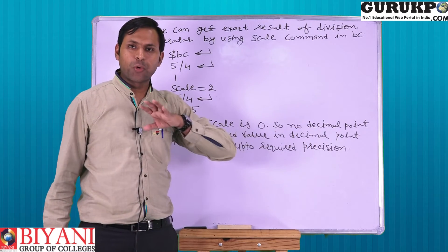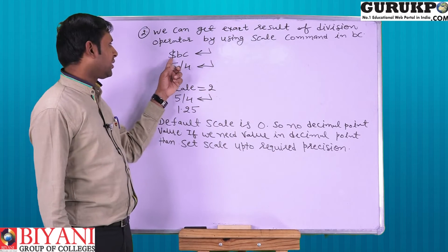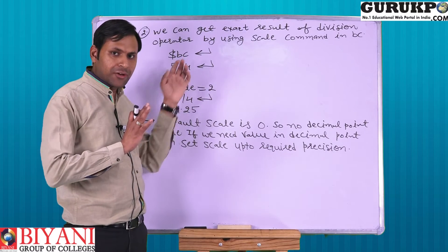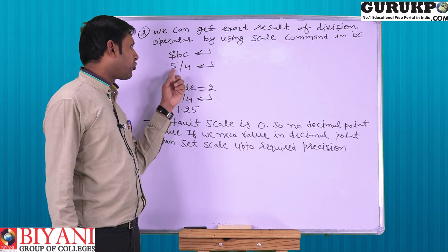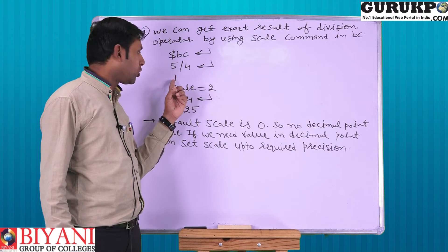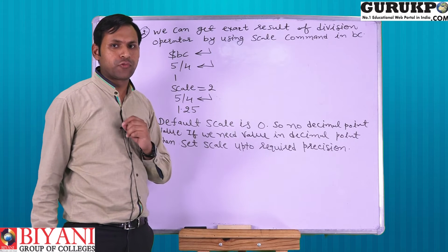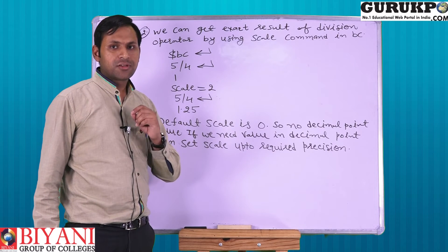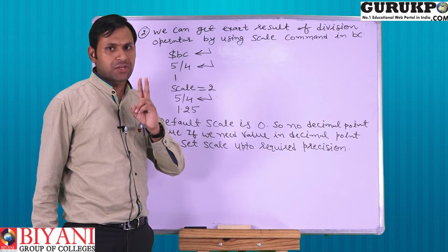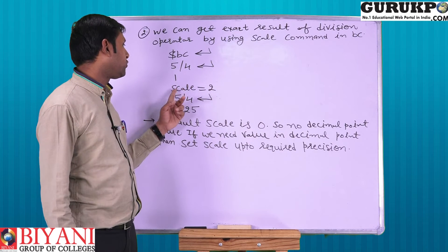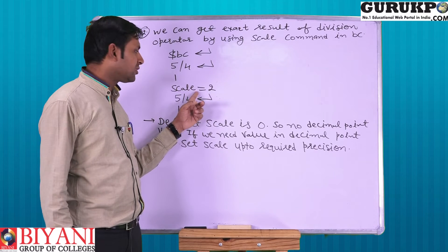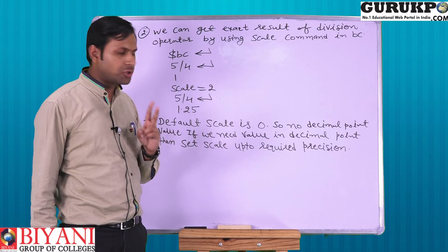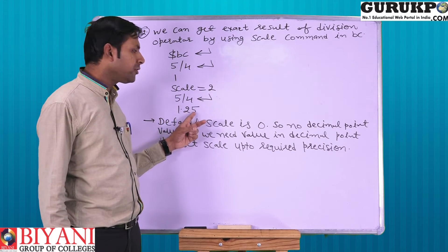By default scale is 0, so no decimal point value. Like at first, by default we are not changing scale, then scale is 0. If we press 5 by 4, then we get only 1, not 1.25. If we want value up to 2 decimal points, then we have to use scale is equal to 2. By this, scale is set up to 2 decimal points. 5 by 4, we get 1.25.